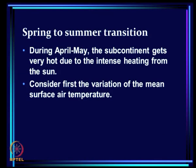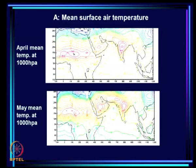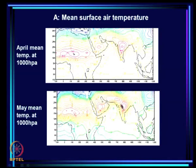During spring — April and May — the subcontinent gets very hot due to intense heating from the sun. Looking at the mean surface air temperature, it is very high over the central part of India. This is April and this is May — temperatures of 34.5 and even higher — these are mean monthly temperatures. Already you see a hot belt stretching from Africa up to India.